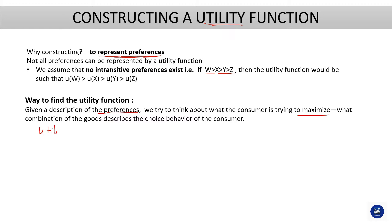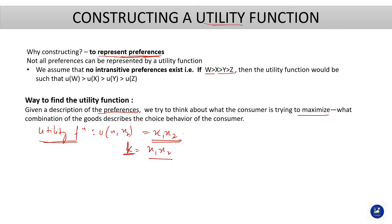Consider an example for constructing a utility function like an indifference curve. Say our utility function is given as U(x1, x2) = x1·x2. The indifference curve for such a function is just the set of all combinations of x1 and x2 such that x1·x2 equals some constant k. This is how the indifference curve for this utility function, for any two commodities, is going to look for some constant value k.